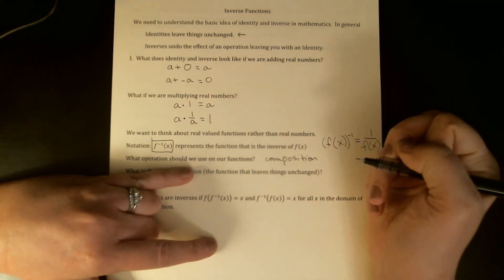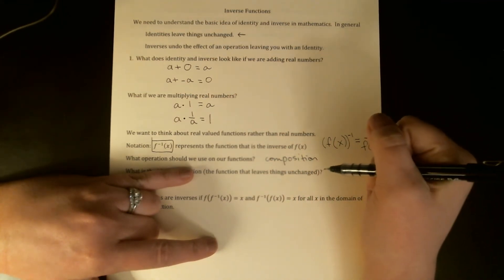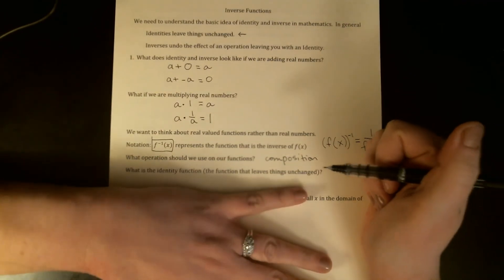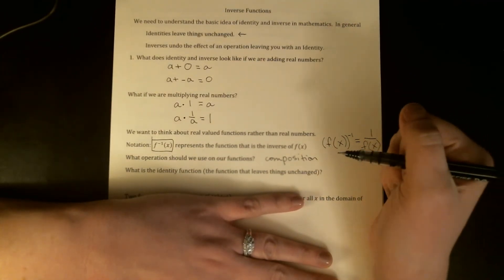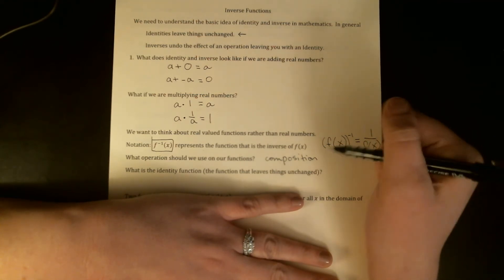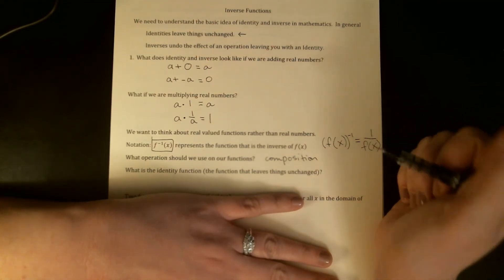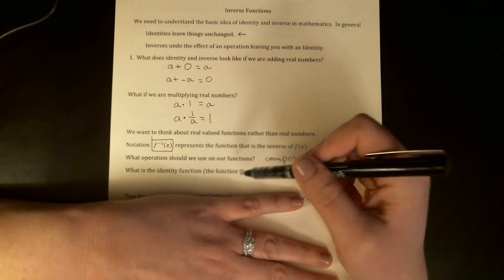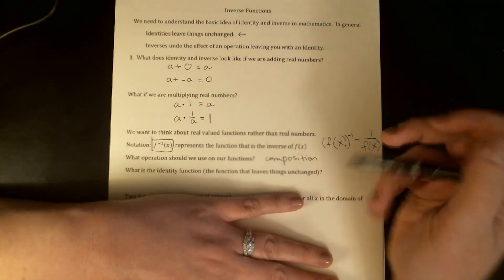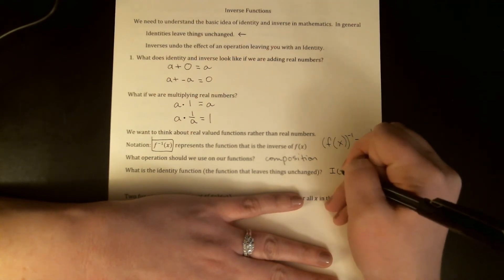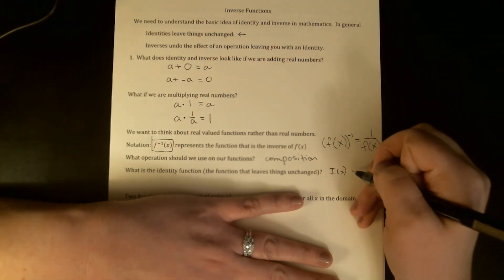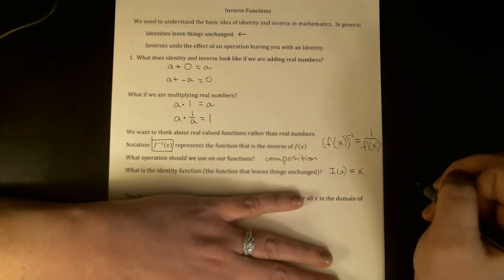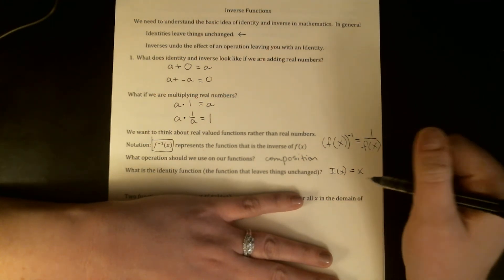We want to talk about what will be the inverse of a function if we compose them together. Last little piece before we can really get into what it means for functions to be inverses is we have to figure out what the identity is. Once we know what the identity function is, we'll know that that's what we want to get when we put two inverses together. The identity function has to be the function that leaves things unchanged. We're looking for a function, I'm going to call it I for identity, that whatever we plug into it, it doesn't change it. That function is actually y equals x, I(x) = x. So our identity function is just y equals x.